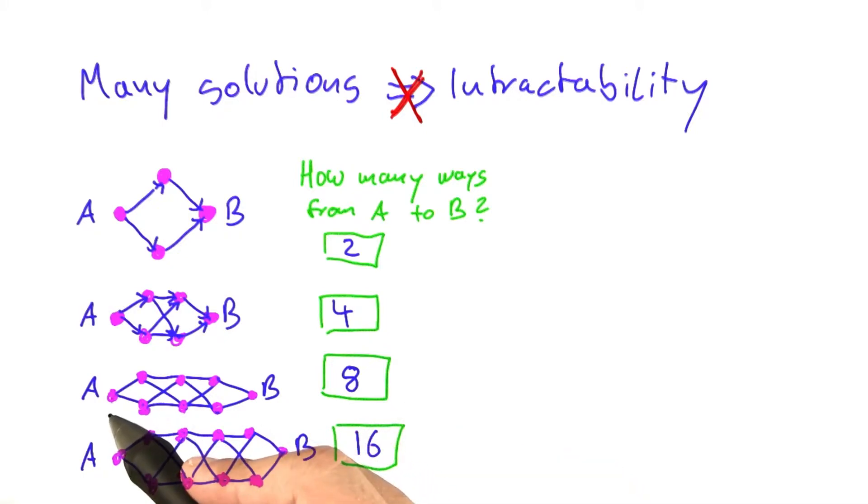That rule is that anytime you want to move forward, you have two different choices that you can make. So once you start in A, there's two different choices. You can go either that way or that way. If you're in this vertex here, you have two choices: you can either stay up here or you can go down here.